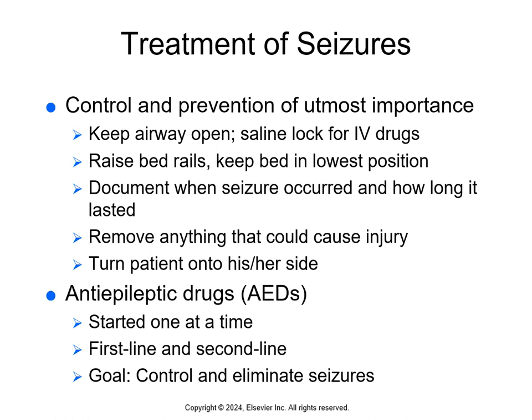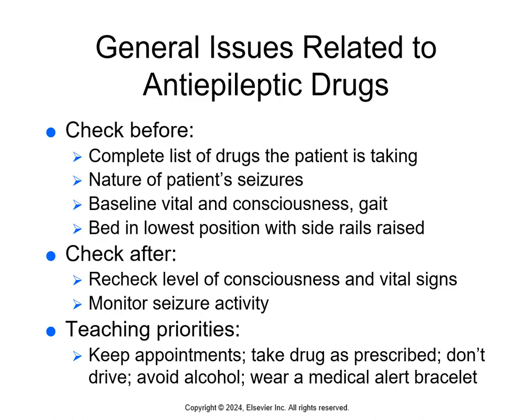If we know there's a problem with seizures, we'll start anti-seizure drugs one at a time. If a drug doesn't work, we can increase the dose or try another. Usually more than one drug is necessary to control and eliminate seizures. Always complete a full drug list — including over-the-counter drugs and herbal medications. Some anti-seizure medications interact with other drugs, especially phenytoin, which increases the effects of anticoagulants and raises the risk for bleeding. Ask about their seizure history and aura, obtain a baseline level of consciousness and vital signs, and recheck after giving medications. These drugs can cause dizziness or drowsiness, so patients should not drive or drink alcohol.